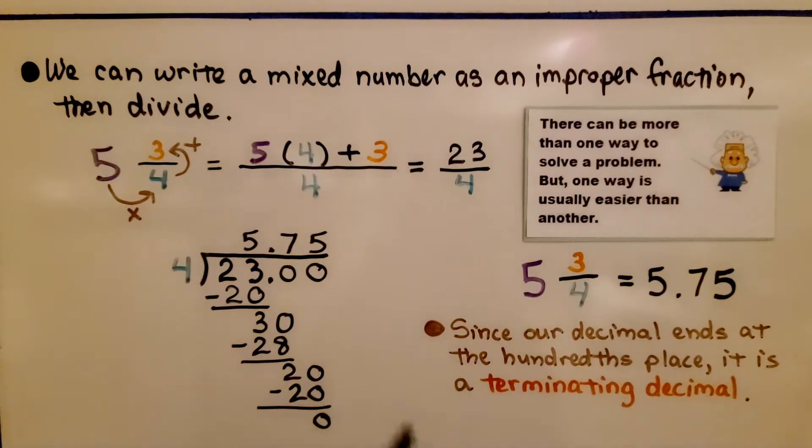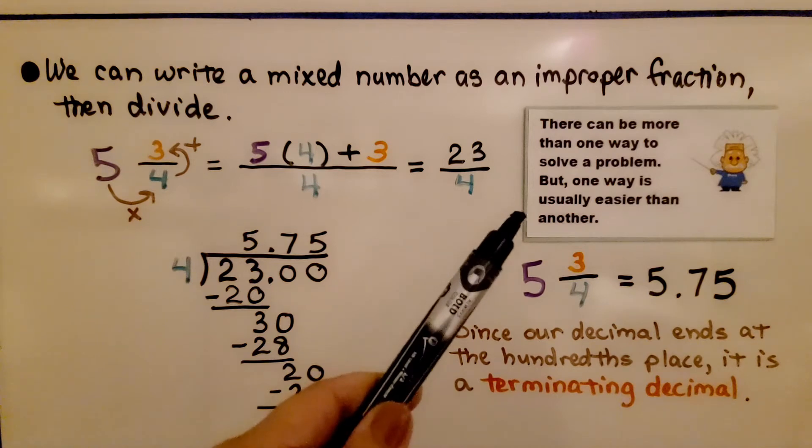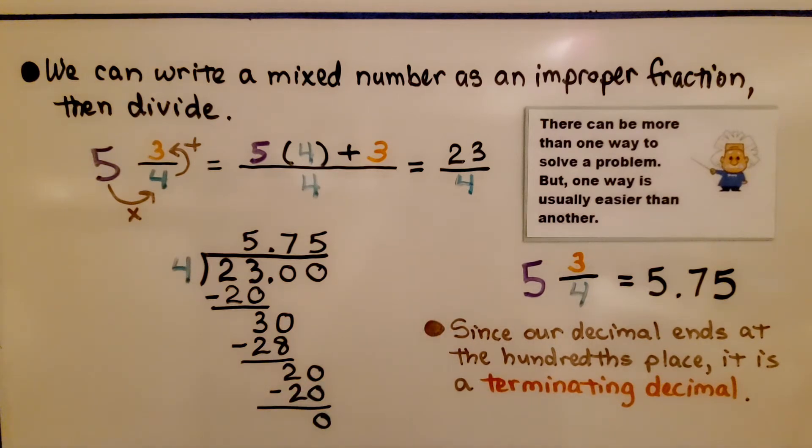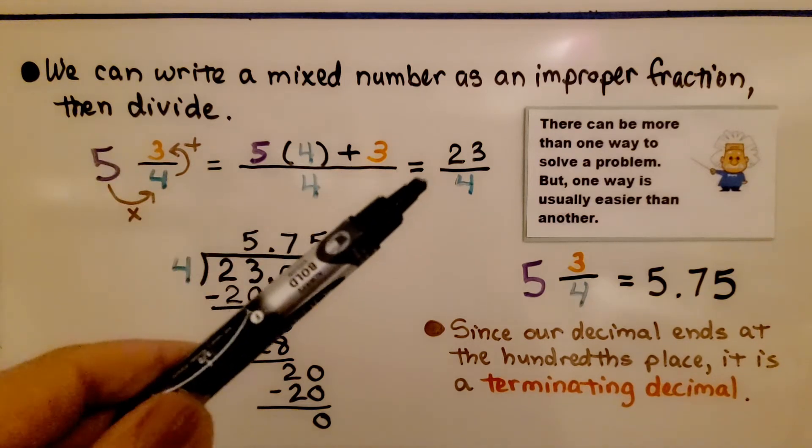Keep in mind, there can be more than one way to solve a problem, but one way is usually easier than another. We can write a mixed number as an improper fraction, then divide. So we can write it as a fraction greater than 1.